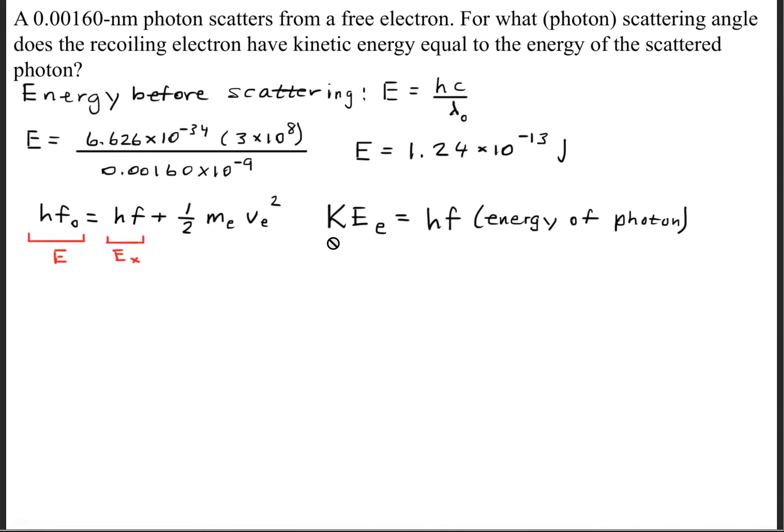Like it was previously mentioned, the kinetic energy of the electron is equal to the energy of a photon. What we can do now is rewrite this as E equals 2E_x. Now we'll solve for E in the x direction, and we'll get that the energy in the x direction is 6.21 times 10 to the negative 14th joules.